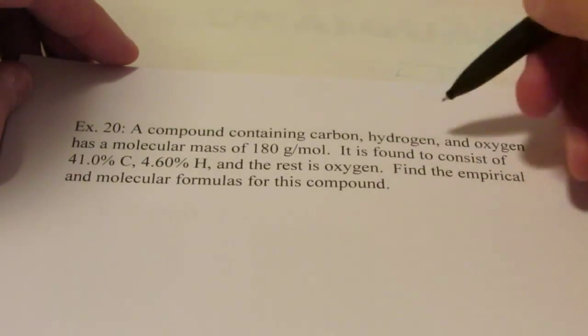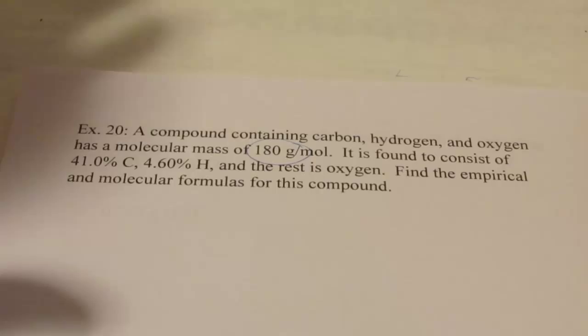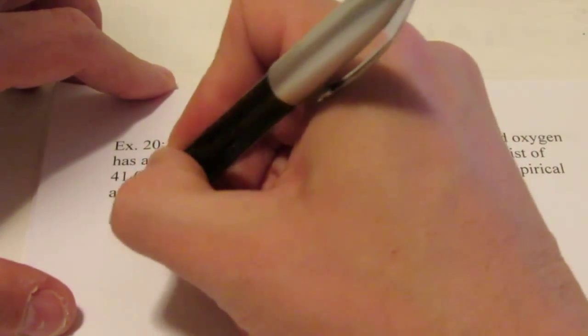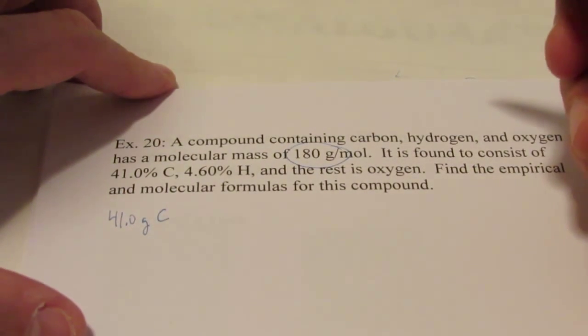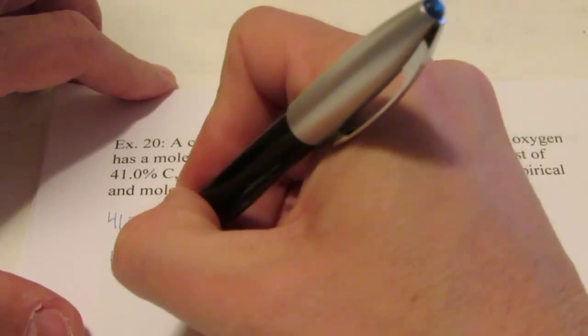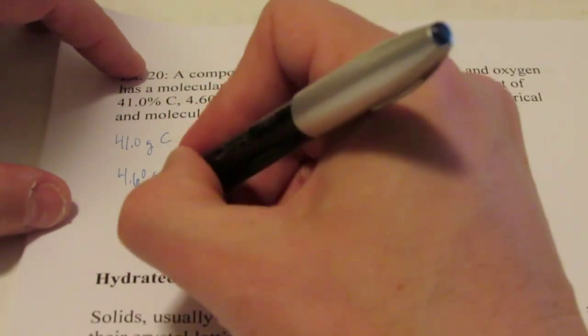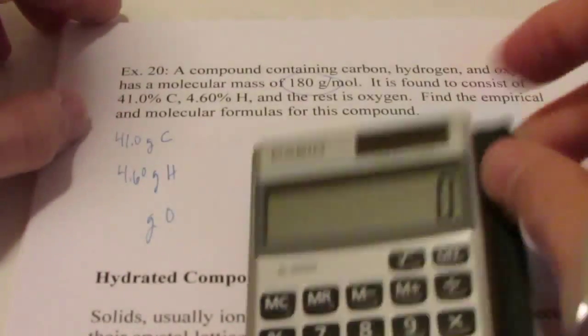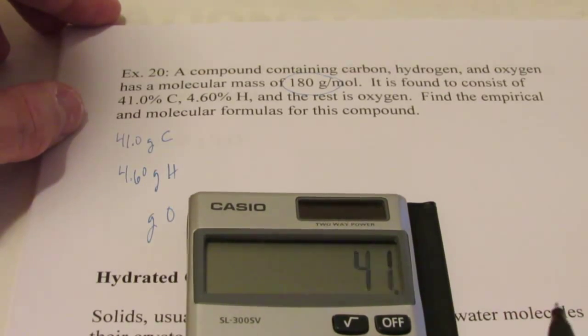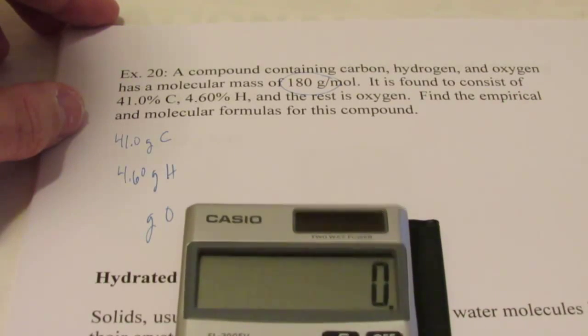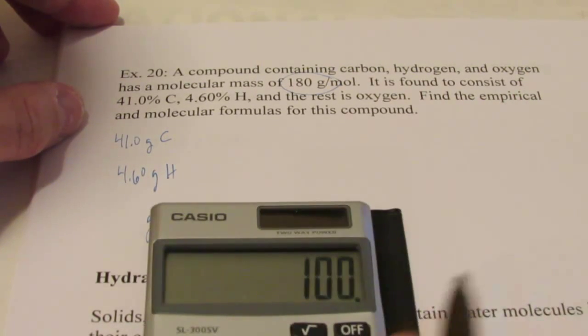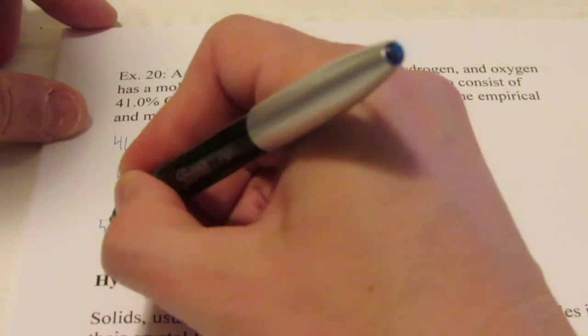Let's do another one. Let's see how you guys are coming along here. A compound contains carbon, hydrogen, oxygen, and has a molecular weight of 180 grams per mole. It's found to consist of 41.0%, so can I say 41.0 grams of carbon out of 100? 4.60 grams of hydrogen, so can I say 4.60 grams out of 100? And the rest is oxygen, so we've got to figure out what's left over from 100. So 100 minus 41.0 minus 4.60. Oh, I must have made a mistake. Let's try that again. 100 minus 41.0 minus 4.60 is 54.4% oxygen. So 54.4 grams out of 100 would be oxygen.